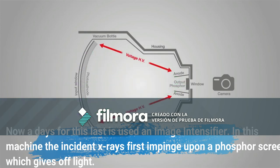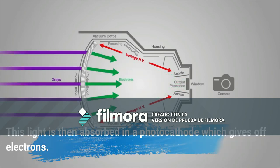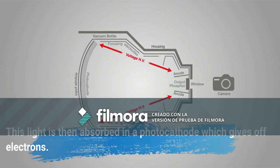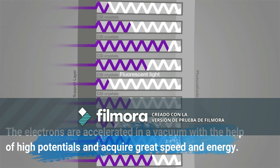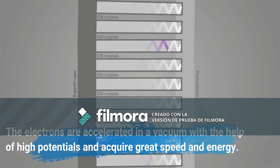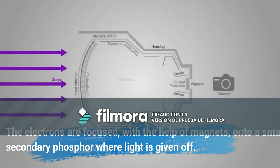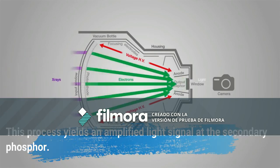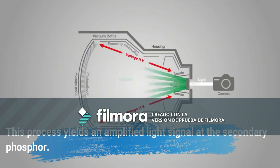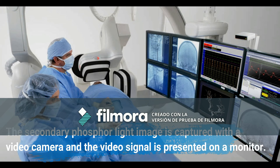Nowadays, for this an image intensifier is used. In this machine the incident x-rays first impinge upon a phosphor screen which gives off light. This light is then absorbed in a photocathode which gives off electrons. The electrons are accelerated in a vacuum with the help of high potentials and acquire great speed and energy. The electrons are focused, with the help of magnets, onto a small secondary phosphor where light is given off. This process yields an amplified light signal from the secondary phosphor. The secondary phosphor light image is captured with a video camera and the video signal is presented on a monitor.